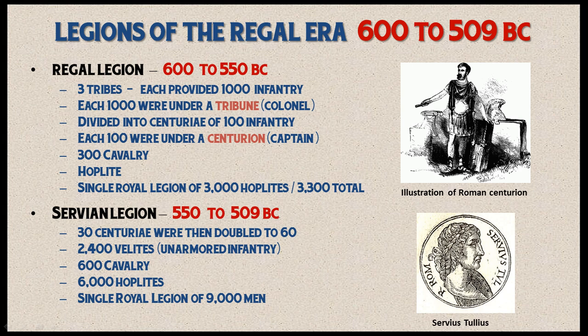The hoplites were also complemented by 300 cavalry and some light unarmored infantry. Similar to the Greek phalanx, the Roman legion consisted of land-owning farmers — very similar to the Greek phalanx that also consisted of farmers.